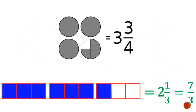Looking at the 4 circles on top: we have 3 circles that are fully shaded, which gives us the 3. The 4th circle is divided into 4 equal parts and 3 of those parts are shaded, giving 3 over 4. So this diagram is showing us 3 and 3 over 4.